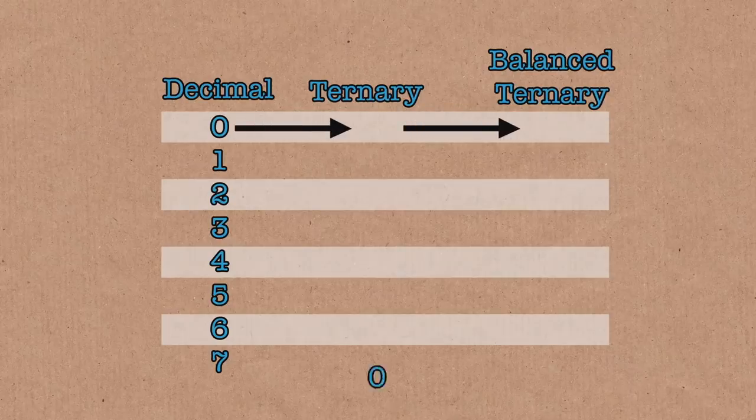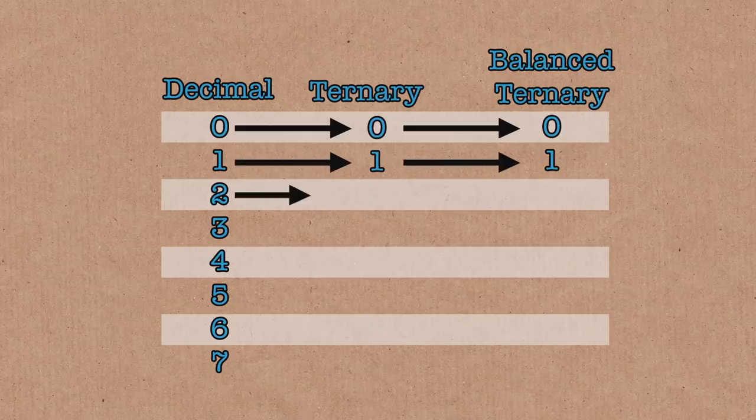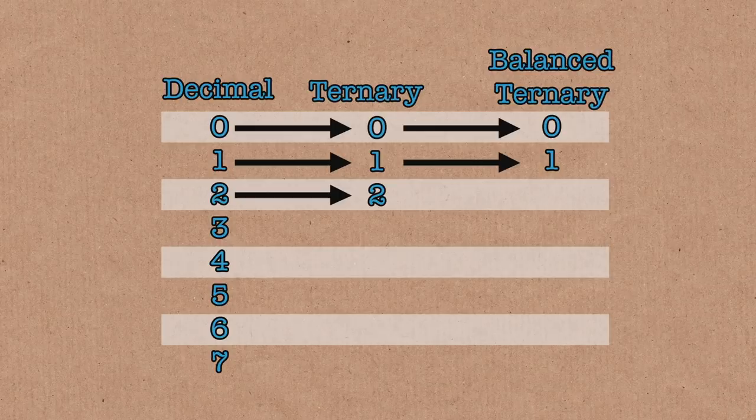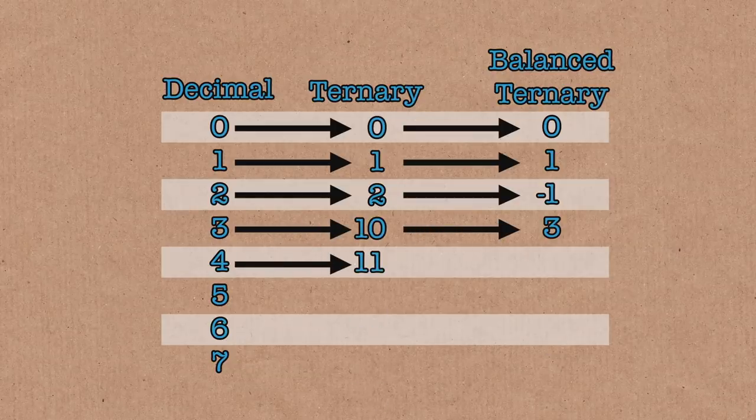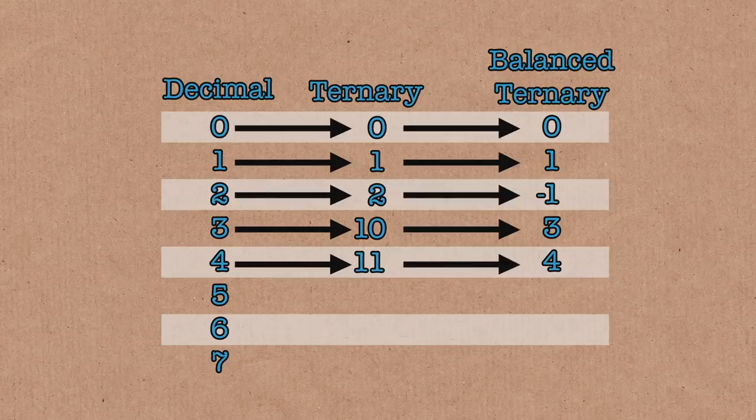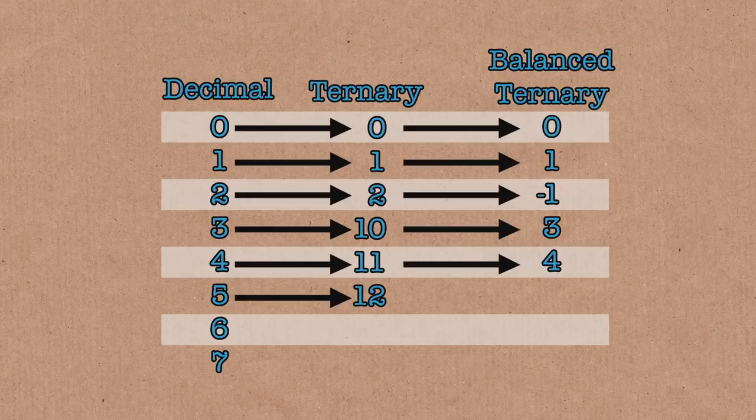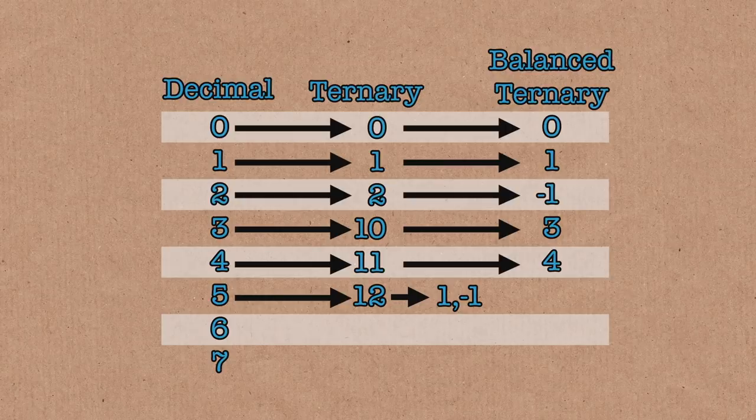Zero is fixed. One is fixed. Two in base three just says two and the rule is replace all the twos by minus ones. So this is now minus one. Three in ternary is one naught so it doesn't change. Four is one one in ternary and it doesn't change, still four. Five is one two which becomes one comma minus one.